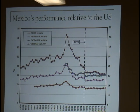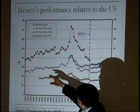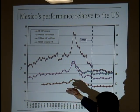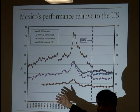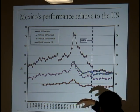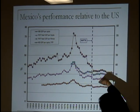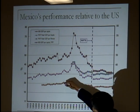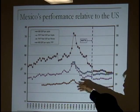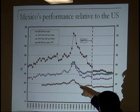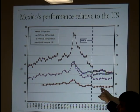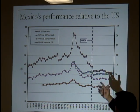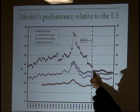One is Mexico's performance relative to the US. Here we have different measures, depending on which one you want to look at. This is the GDP per capita or GDP per worker in Mexico relative to the same variable in the US. Let's look at real GDP per worker over here.